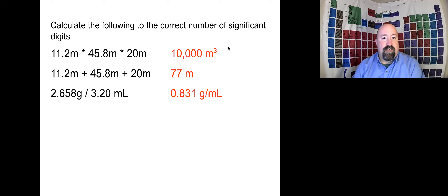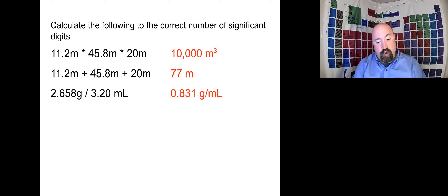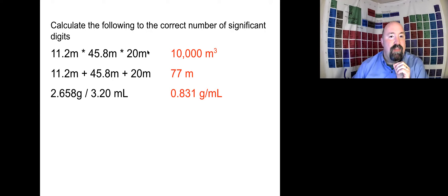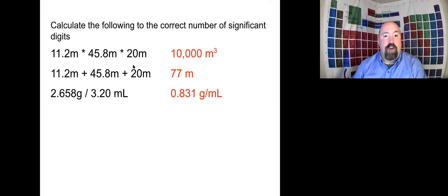Hopefully you got these answers. For the first one, 10,000 meters cubed. When you put this into your calculator you get 10,259.2. However, this is a multiplication problem, and we only have one significant digit in this measurement here, so our answer has to be rounded to only one significant digit as well — giving us 10,000. When we look at the units, we have meters times meters times meters, so we end up with meters cubed. You can envision this being the volume of some large room.